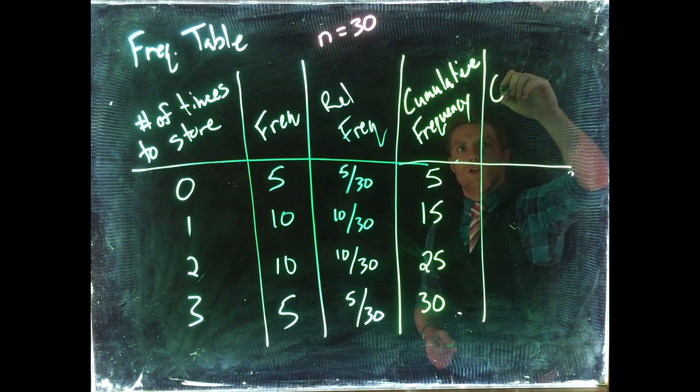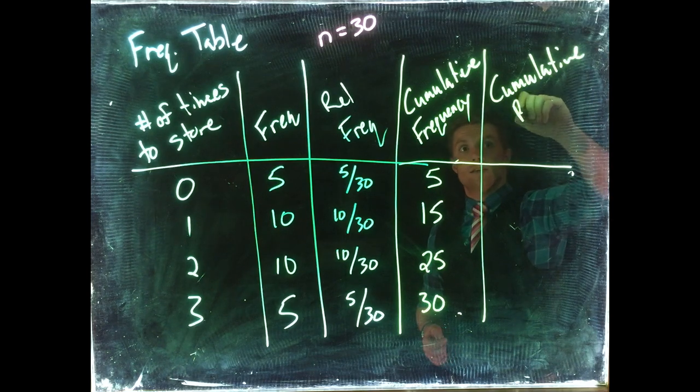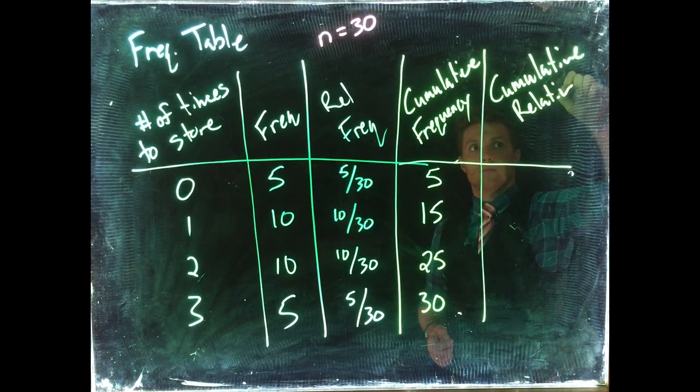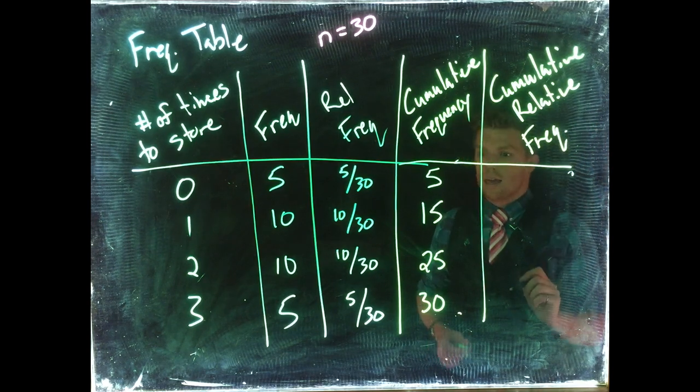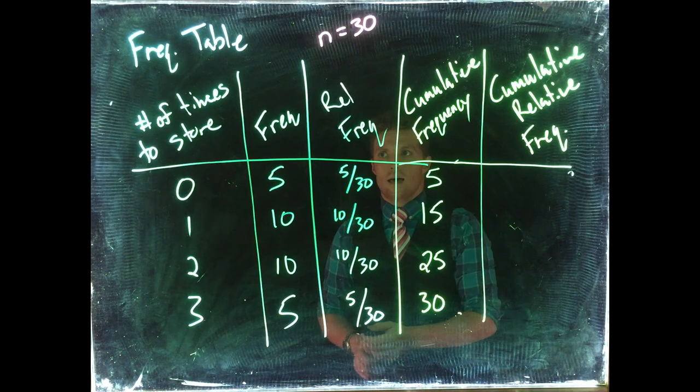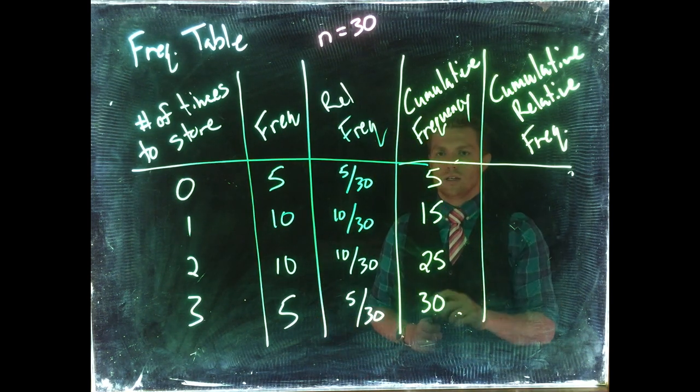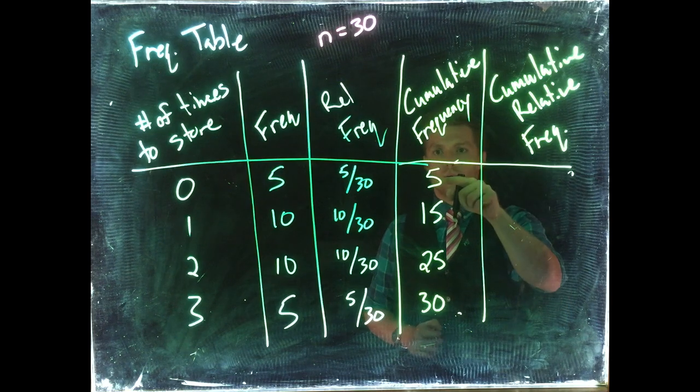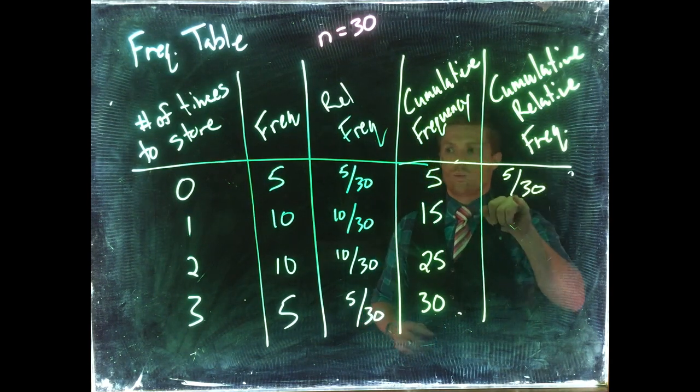We can add in one more column. This is the cumulative relative frequency, and this is very similar to the relative frequency. Now the only difference is that we use the cumulative frequency in our numerator.